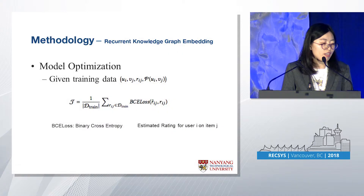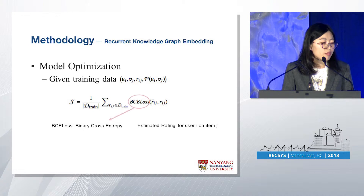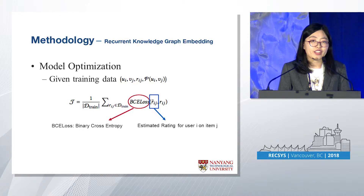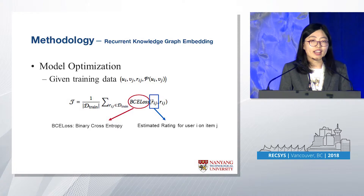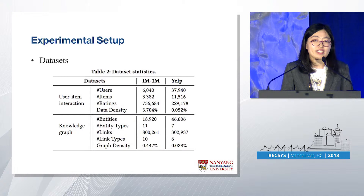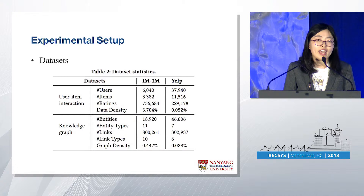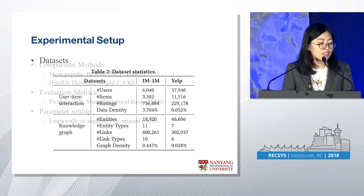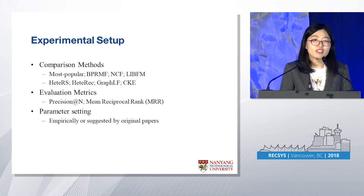Here is our model optimization. The objective function uses BCE loss, which is the binary cross-entropy. Our predicted output is the estimated rating for a user on items. We use two public datasets: MovieLens 1 million and another dataset. Here is some statistical information, and we compare with several state-of-the-art methods.